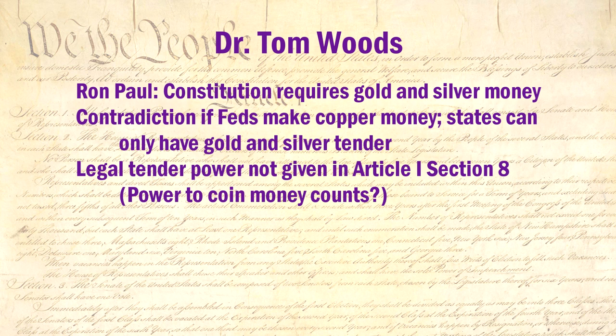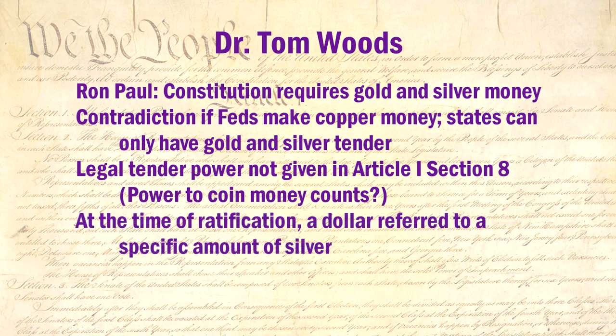But before I do, let's consider Dr. Woods' third argument: that the word 'dollar' meant something specific when the Constitution was ratified — specifically, a Spanish coin of a particular weight and purity of silver. The Constitution uses the word 'dollar' twice: once in Article 1, Section 9, where it imposes a cap on the tax from the slave trade, and again in the Seventh Amendment, where it guarantees the right of trial by jury in suits where the value in controversy exceeds twenty dollars. Remember from Lecture 2 that the proper interpretation of the Constitution is to use the meaning of the words as they were understood at the time. This is what Woods is doing.